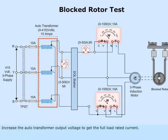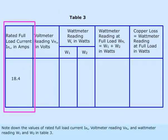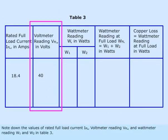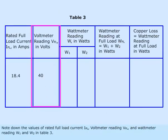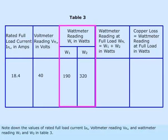Increase the autotransformer output voltage to get the full load rated current. Note down the values of rated full load current IFL, voltmeter reading VFL, and wattmeter readings W1 and W2 in table 3.